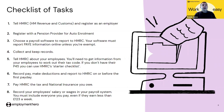Record pay, make deductions, and report to HMRC on or before the first payment date, and then pay HMRC the taxes after you've paid your employees. You need to record employees' salaries and wages in your payroll system, and you must include everyone you pay even if they earn less than £123 per week.